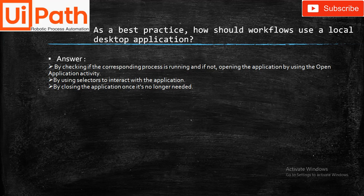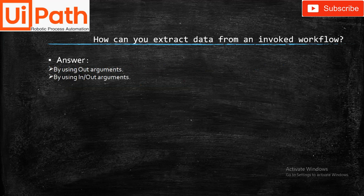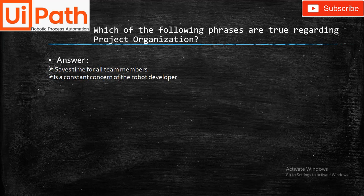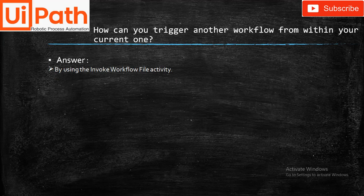Best practices for desktop application workflows also include: using selectors to interact with the application, and closing the application once it is no longer needed. A good workflow name example is GetCustomerNumber.xaml. To extract data from an invoked workflow, use Out arguments or In/Out arguments. Regarding project organization: it saves time for all team members and is a constant concern of the robot developer.